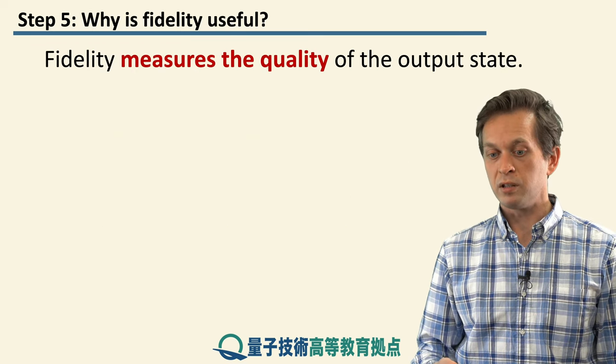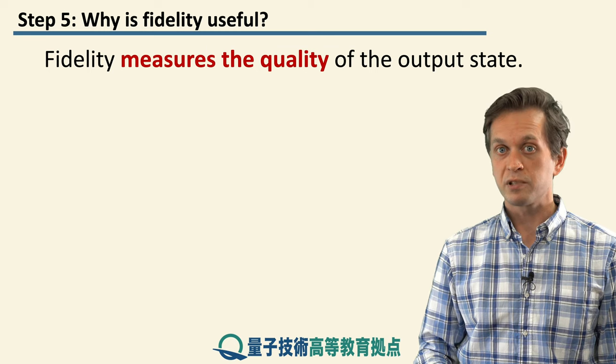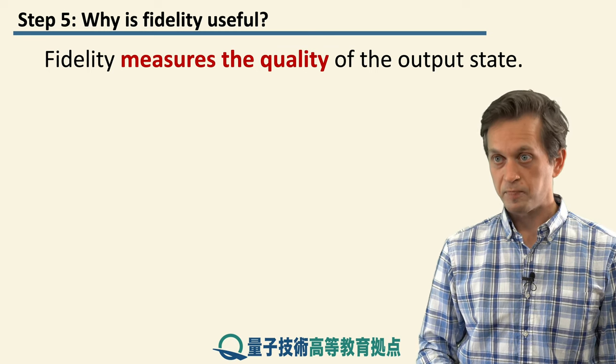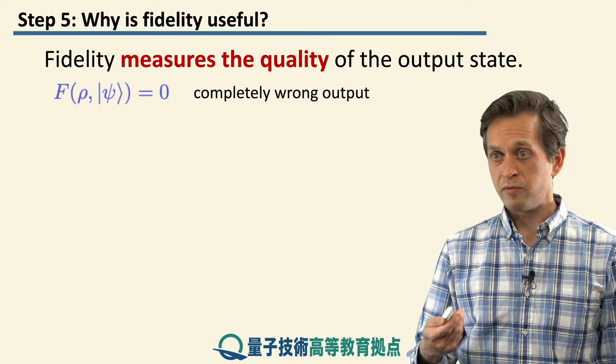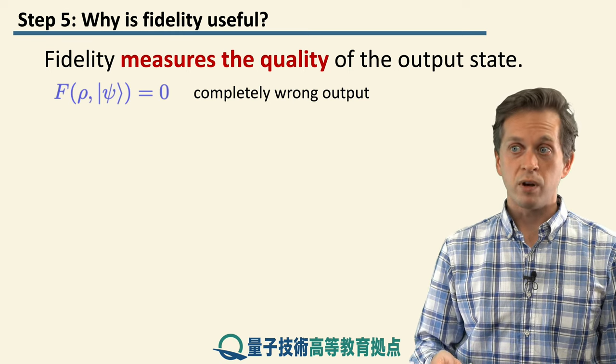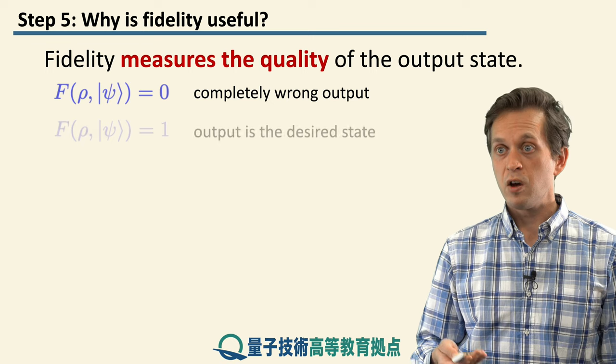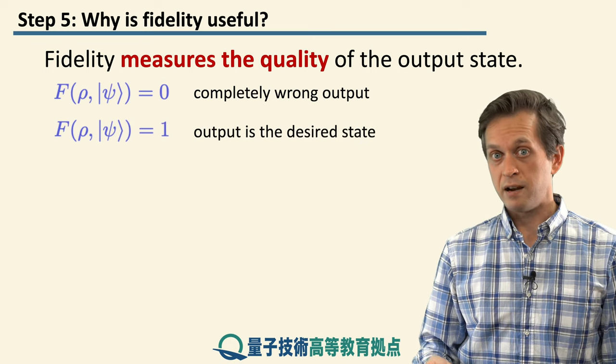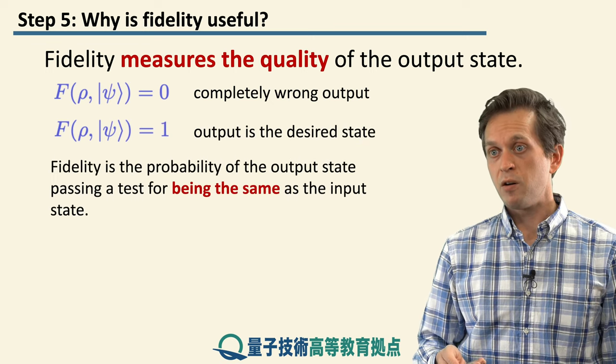So why do we care about a single number that describes what happens at the output? Well, as we said, fidelity measures the quality of the state. When it's 0, we are completely in the wrong state. When it's 1, we are in the desired state.